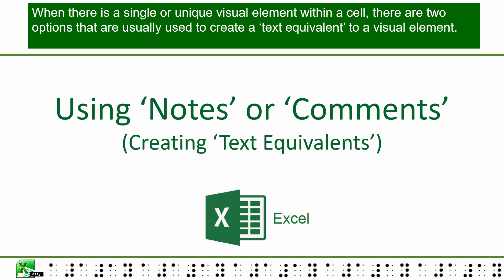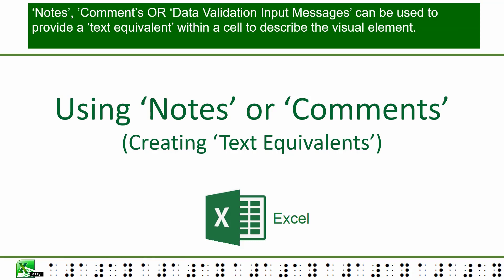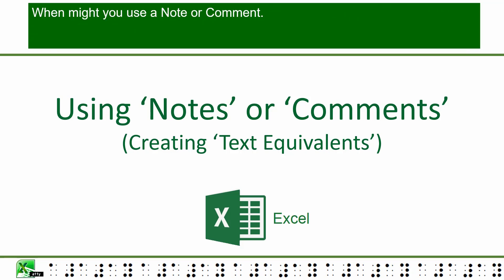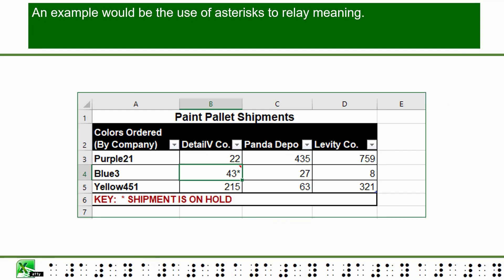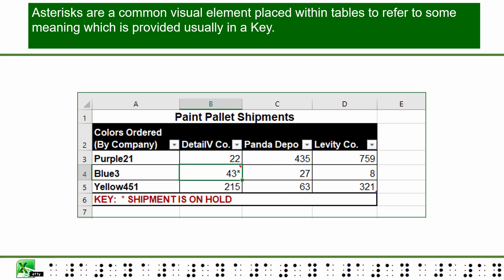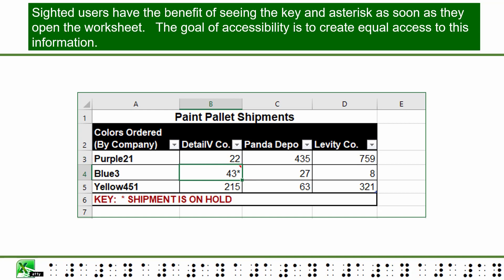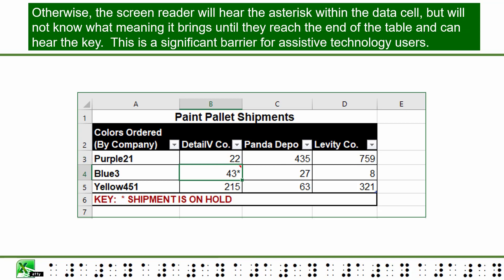When there is a single or unique visual element within a cell, notes, comments, or data validation input messages can be used to provide a text equivalent within a cell to describe the visual element. While both meet accessibility standards, notes and comments are the most accessible options. An example would be the use of an asterisk to relay meaning. Asterisks are a common visual element placed within tables to refer to some meaning provided usually in a key. In this case, the asterisk in cell B4 indicates that the shipment of Blue 3 is on hold. Sighted users have the benefit of seeing the key and asterisks as soon as they open the worksheet, but otherwise the screen reader will hear the asterisk within the data cell without knowing its meaning until they reach the end of the table — a significant barrier for assistive technology users.